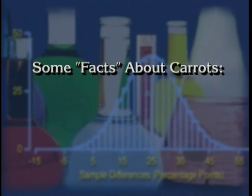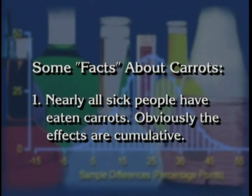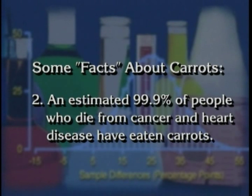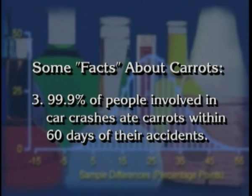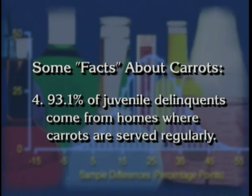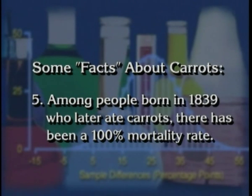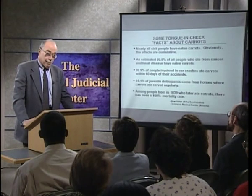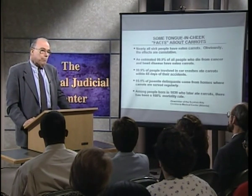You see here a list of some tongue-in-cheek facts about carrots. Nearly all sick people have eaten carrots. Obviously the effects are cumulative. An estimated 99.9% of people who die from cancer and heart disease have eaten carrots. 99.9% of people involved in car crashes ate carrots within 60 days of their accidents. 93.1% of juvenile delinquents come from homes where carrots are served regularly. And among people born in 1839 who later ate carrots, there has been a 100% mortality rate. The real problem here is that we have no comparison group — these data are given without knowing what percent of people in the general population have eaten carrots. Underlying the questions that epidemiology addresses is the need for comparisons.